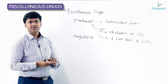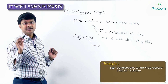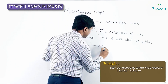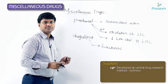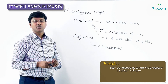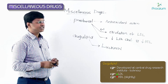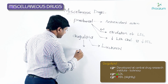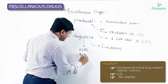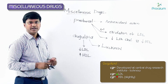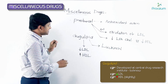Gugulipid was developed at the Central Drug Research Institute, Lucknow. It causes a modest decrease in LDL cholesterol and a slight increase in HDL cholesterol.